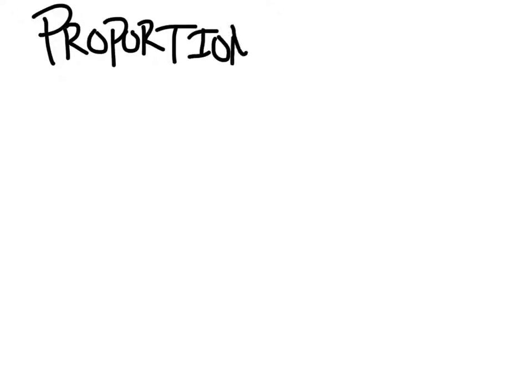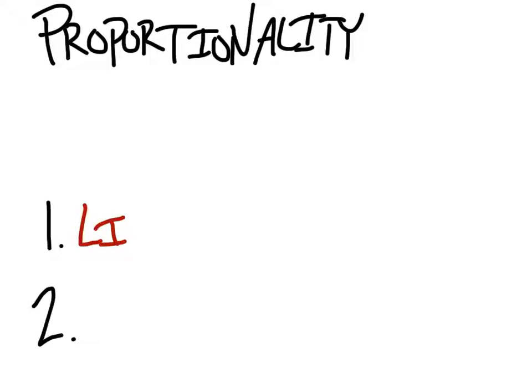Let's talk about proportionality. There are two things you need for proportionality. What is the first thing that you absolutely, positively must have? Dawson. Linear. Must be linear.